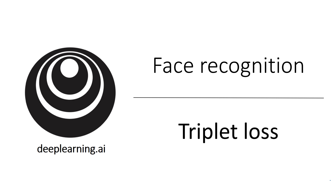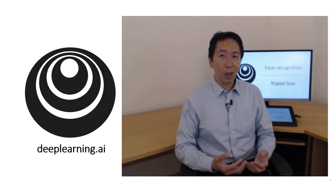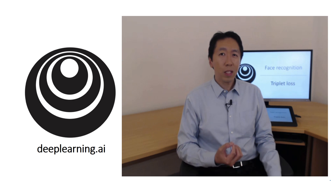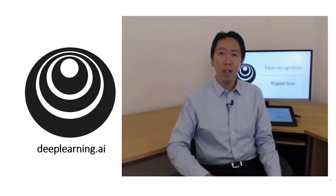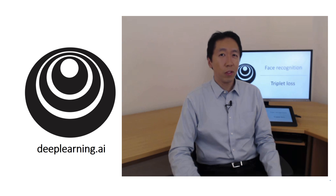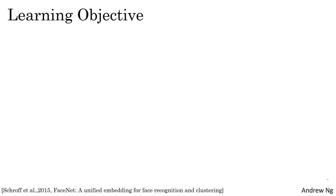One way to learn the parameters of the neural network so that it gives you a good encoding for your pictures of faces is to define and apply gradient descent on the triplet loss function. Let's see what that means.